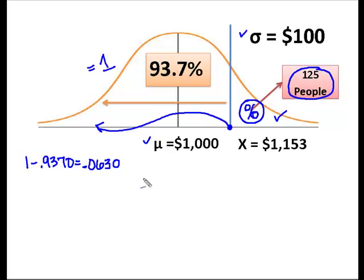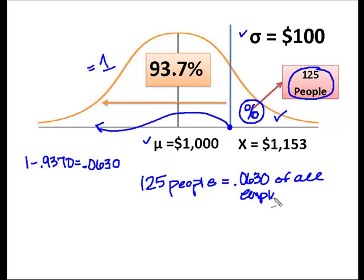So now what I know is this. I know that 125 people are the same thing as 0.0630 of all of the employees. Well, if I know that 6.30% equals 125, then can I simply say that 125 is equal to 0.0630 of some unknown value of X? And if I take and divide that out...